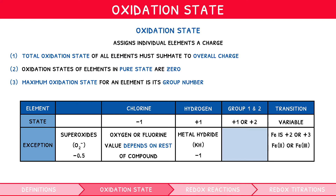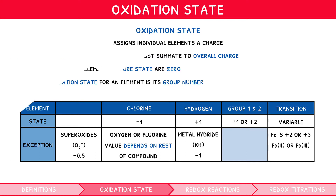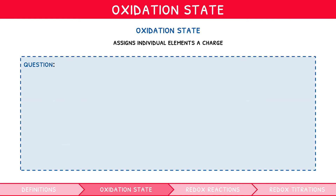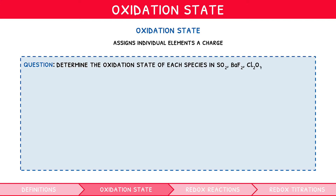You are expected to identify oxidation states in several compounds. Let's cover an example question to summarise the rules we've outlined here. Determine the oxidation state of each species in SO₂, BaF₂, Cl₂O₇, NaH, and CrO₄²⁻. In the first, oxygen is usually −2; since there are 2, this totals to −4, and so sulfur must be +4.